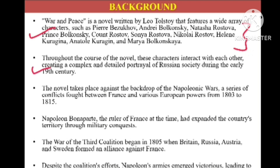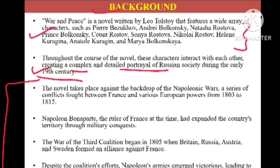Throughout the novel, these characters interact with each other, creating a complex and detailed portrayal of Russian society during the early 19th century. Russian society was divided — between poor people, elite people, and the middle class — and class distinction caused division. But Leo Tolstoy, in a vivid manner, decided to give a full portrait of Russian society so that we can understand the text in a judicious way.